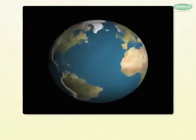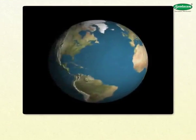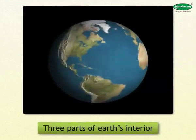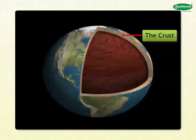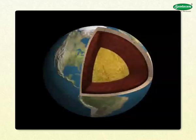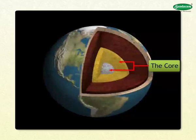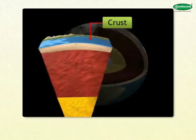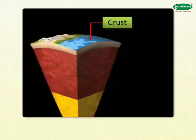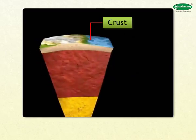In order to answer the question, we can divide the earth's interior into three parts: one, the crust; two, the mantle; three, the core. The crust is the outermost layer of earth. It is made up of solid rocks.